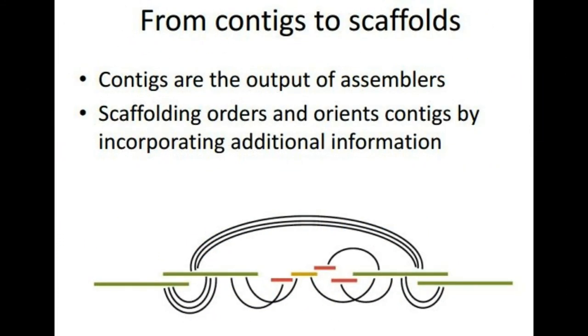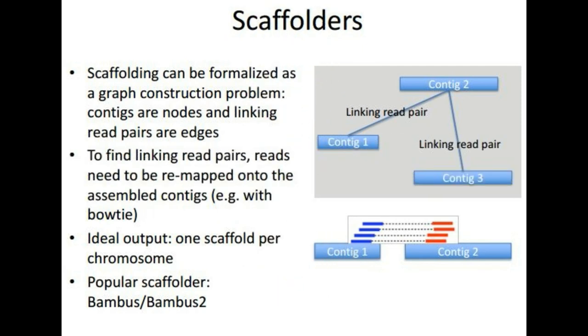We use the technique of scaffolding in order to reorient and order the contigs by incorporating some additional information. So we can have paired reads where the paired reads can bridge contigs because they may overlap in the middle, so we know that they might be placed close to each other or far from each other. Paired reads can also detect contigs assembled backwards.